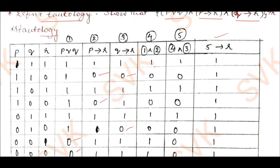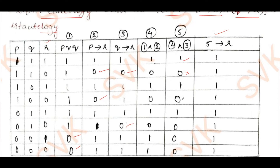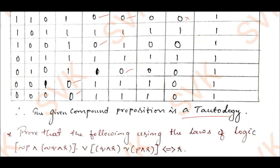For column 4 (column 1 conjunction column 2): wherever I have true and true I put 1, all other cases 0. Similarly for column 5 (column 4 conjunction column 3). Finally, for the last column — column 5 implies r — wherever I would have 1 and 0 I put 0, but such a case does not occur here. Therefore all truth values are 1, and the given compound proposition is a tautology.